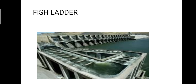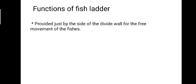Rivers are important sources of fish. There are various types of fish in the river, and the tendency of fish in general is to move from upstream to downstream in winter, and from downstream to upstream in monsoon. This movement is essential for their survival. The function of the fish ladder is to provide a passage beside the divide wall for the free movement of fishes.